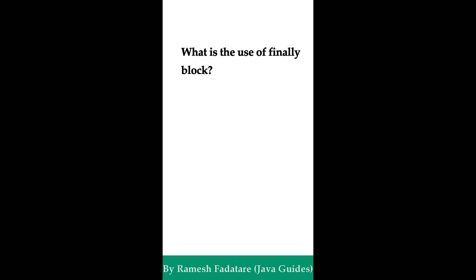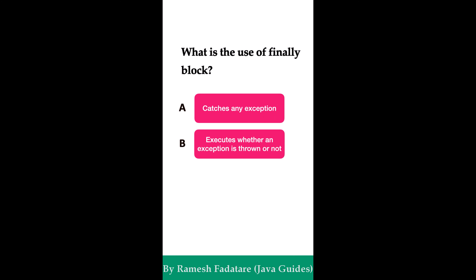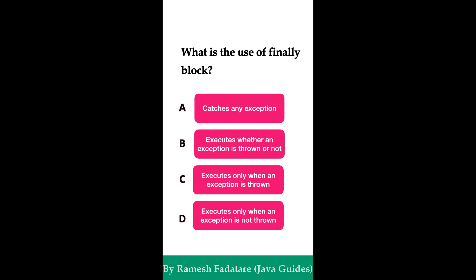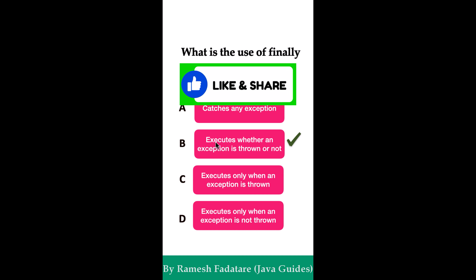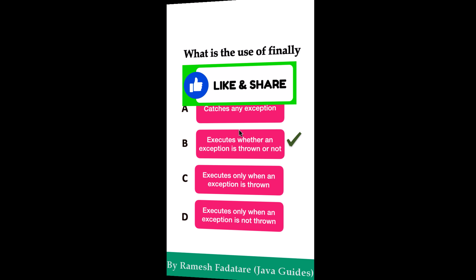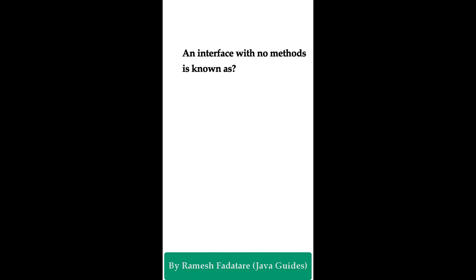What is the use of the finally block? Option A: it catches any exception. Option B: it executes whether an exception is thrown or not. Option C: it executes only when an exception is thrown. Option D: it executes only when an exception is not thrown. The correct answer is option B — it always executes whether an exception is thrown or not. The finally block executes after the try and catch blocks regardless of whether an exception is thrown or caught. It is the perfect place for cleanup operations like closing files or database connections.